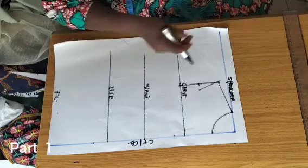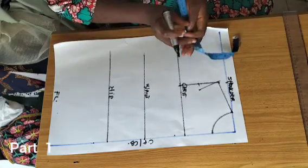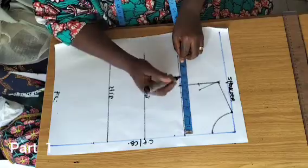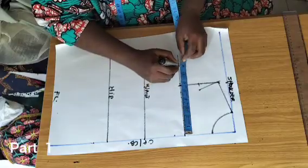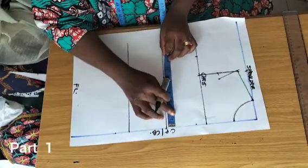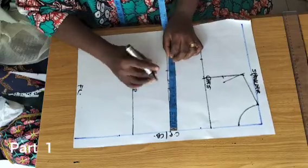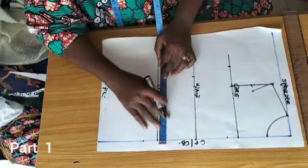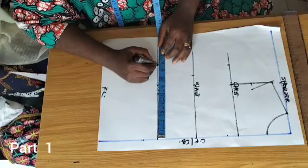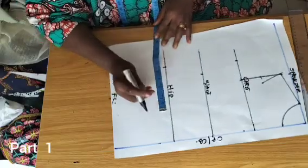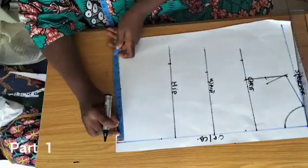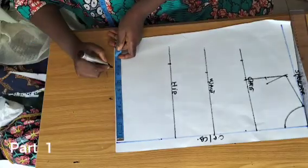I'm going to measure my chest line — that is my bust circumference divided by 4. Whatever your bust is divided by 4, you mark. Whatever your waist is divided by 4, you mark. Whatever your hip is divided by 4, you mark as well. Whatever I have on the hip divided by 4, I'll bring it down to the floor level.